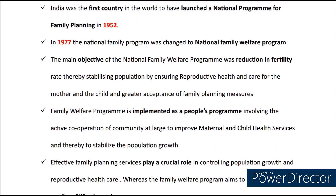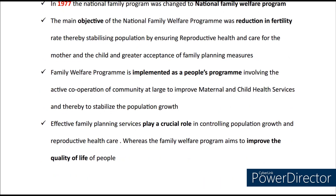India was the first country to launch a national program for family planning, in 1952, and in 1977 it got changed to National Family Welfare Programme. The main objective of the program was to reduce the fertility rate and it was implemented as a people's program which involved the active cooperation of the community. Effective family planning services play a crucial role in controlling population growth and reproductive health care, whereas the Family Welfare Programme aims to improve the quality of life of people.